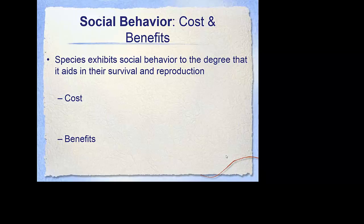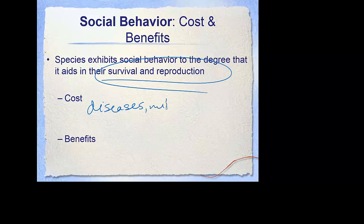Social behavior is about survival and reproduction, but there are costs to that. If you're living as a large population group, you're exposed to all kinds of diseases, parasites, mites — all kinds of things. And if one has it, they all have it. We also have to worry about the weakest member. If you're going to have a strong social network, you don't leave the weakest member behind, but that weakest member will slow everyone down. These are huge costs to a population.